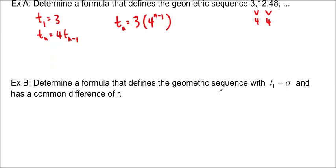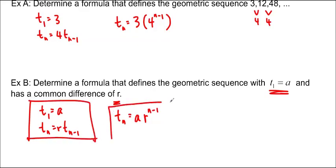Now we can do the general case. Determine a formula that defines the geometric sequence with T sub 1 equals A, and that has a common ratio of R. If I want to do that in the recursive formula, T sub 1 will be equal to A, and every other one will be the previous one times R, so R times T sub n minus 1. To find the general form, we're going to start with A and multiply by powers of R, so R to the n minus 1. So these are the two formulas for the geometric sequence, and they're the general form.